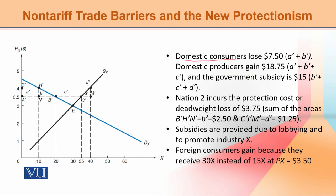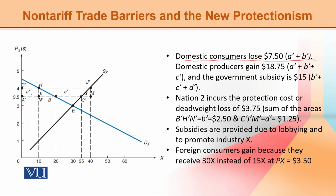If you look here, you can see the domestic consumer loses — that is areas A-bar and B-bar. The base is $10 and the height is $0.5.